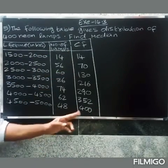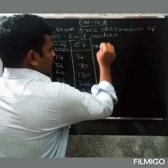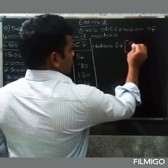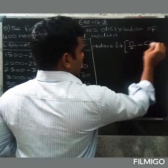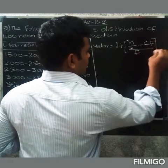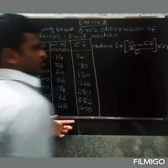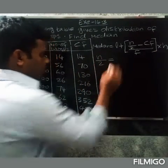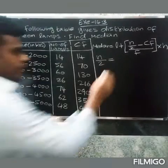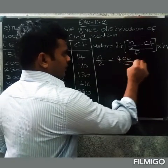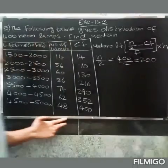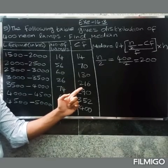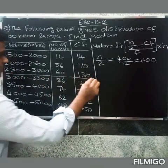400 divided by 2, 200. So 200 nearby value, that's a greater value. So nearby value, greater value, 216. So median class.